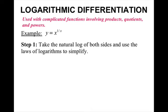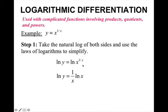You're going to want to take the natural log of both sides and use the laws of logarithms to simplify. So taking the natural log of both sides gives natural log of y equals the natural log of x to the 1 over x. Use the power logarithmic property to bring down the exponent: natural log of y equals 1 over x times the natural log of x. Rewrite 1 over x as x to the negative 1 times the natural log of x. Your step 2 is to now use implicit differentiation to find dy/dx.